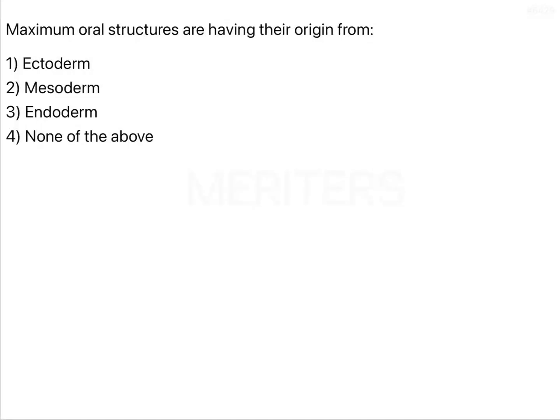Maximum oral structures are having their origin from — the options are ectoderm, mesoderm, endoderm, and none of the above. When we refer to maximum oral structures, that means the structures seen in the oral cavity. I would like to discuss about the surface ectoderm derivatives here.